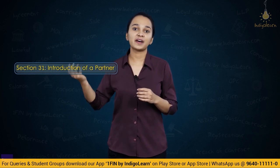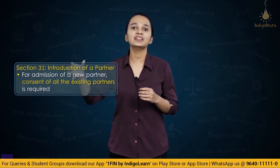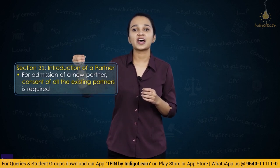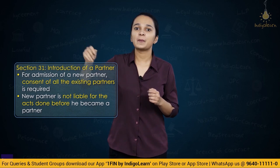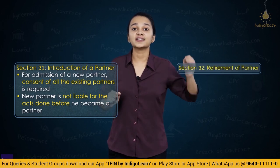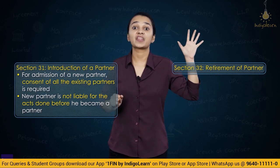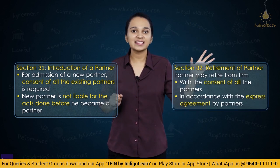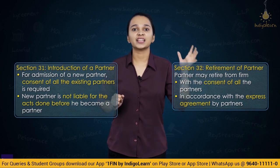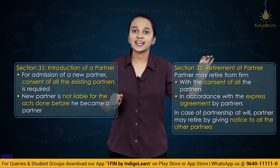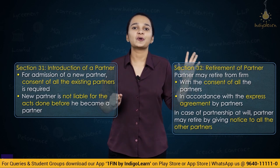After this, we started with reconstitution of the firm. Section 31 — introduction of a partner can happen only with consent of all partners, and the new partner is liable for debts incurred after the date he becomes a partner. Section 32 — retirement of a partner. A partner can retire with consent of all partners, as per express agreement, or in case of partnership at will, by giving notice of intention to retire to all other partners. Public notice of retirement is necessary, and a retiring partner remains liable for all acts until the date of public notice.